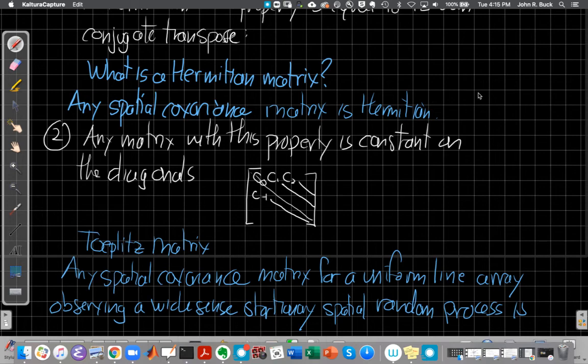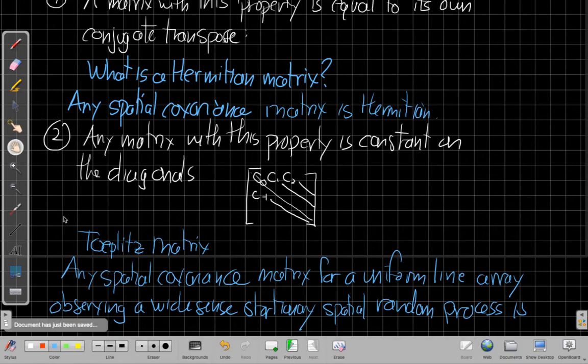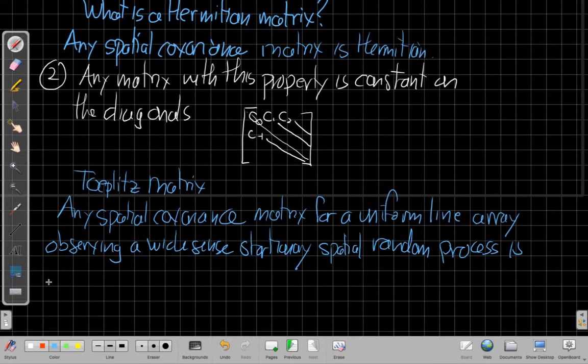So that's called a Toeplitz matrix, anything that's constant on the diagonals. So any spatial covariance, and it turns out any spatial covariance matrix for a uniform line array, which are the arrays we think about most of the time in this class, that's observing a wide-sense stationary spatial random process is a Toeplitz matrix. So that for most of the spatial covariance matrices we're going to see, well, they're all going to follow the first one, and most will also be Toeplitz.